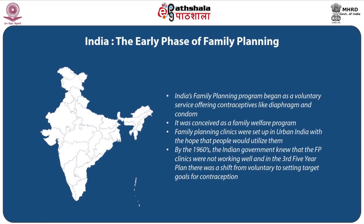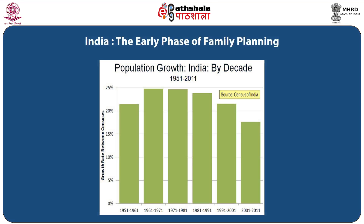India's family planning program began as a voluntary service offering contraceptives like diaphragm and condom. It was conceived as a family welfare program. Family planning clinics were set up in urban India with the hope that people would utilize them. By the 1960s, the Indian government knew that the family planning clinics were not working well, and in the third five-year plan, there was a shift from voluntary to setting target goals for contraception.